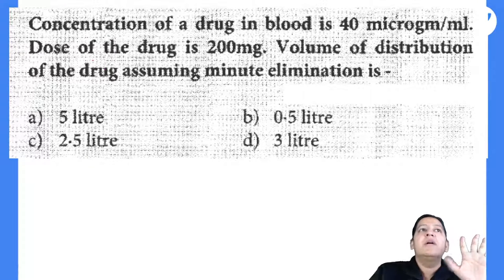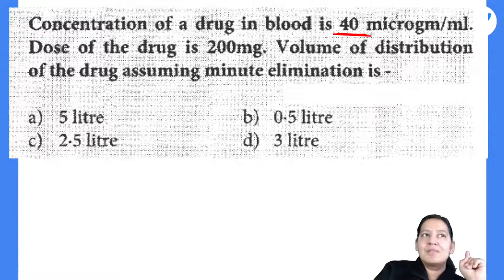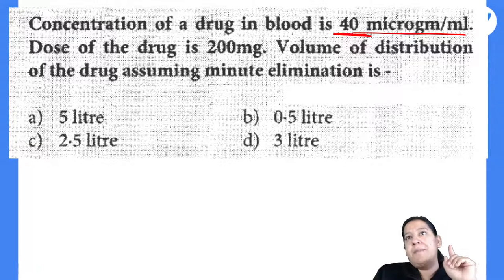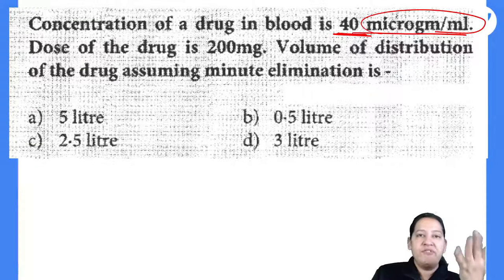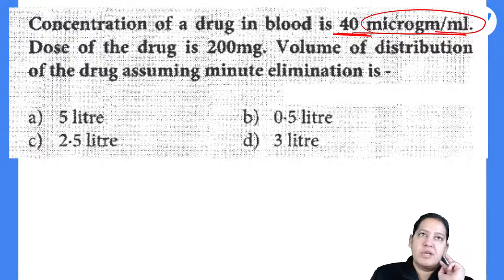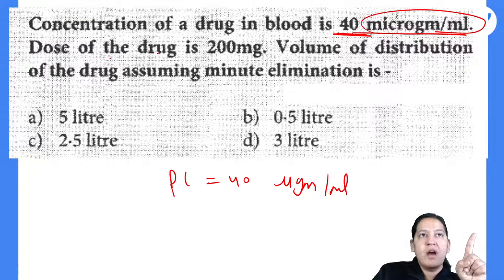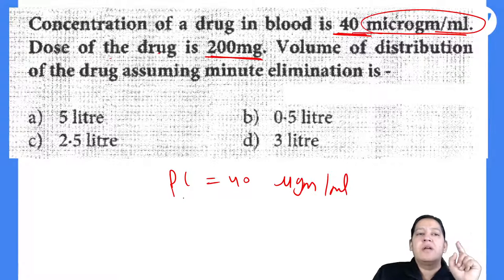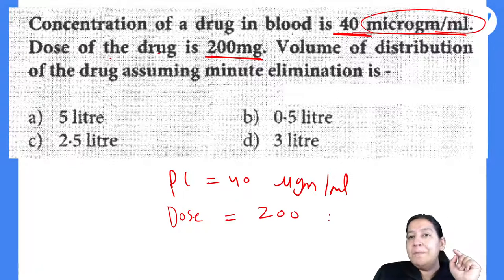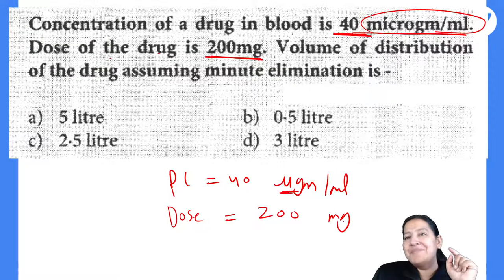For the numerical: plasma concentration = 40 micrograms/ml, IV dose = 200 mg. Convert both to grams: 200 mg = 200 × 10⁻³ grams; 40 micrograms/ml = 40 × 10⁻⁶ grams/ml. Dividing gives 5 × 10³ ml = 5000 ml = 5 liters. So the answer is 5 liters. Those saying A are right. The difficult part here was unit conversion — convert everything to grams first.